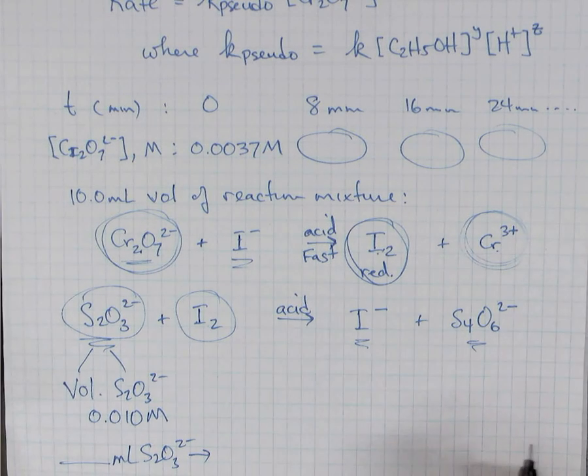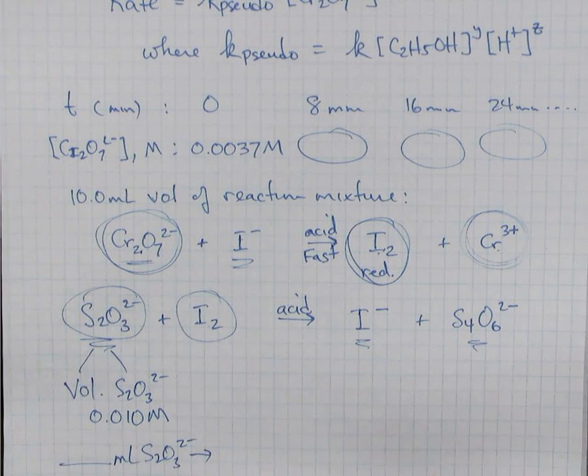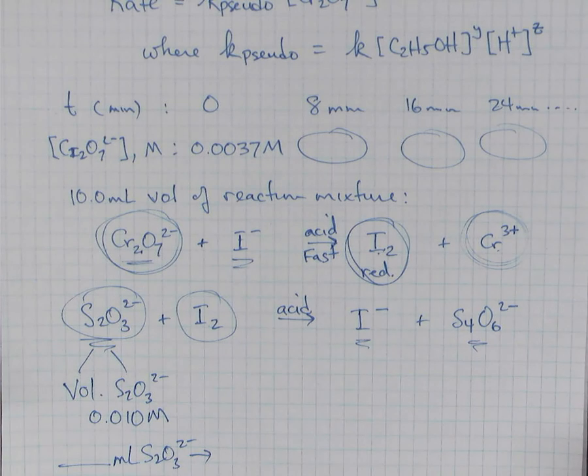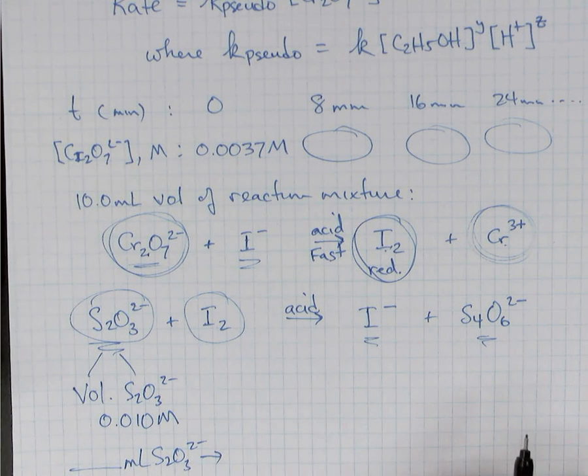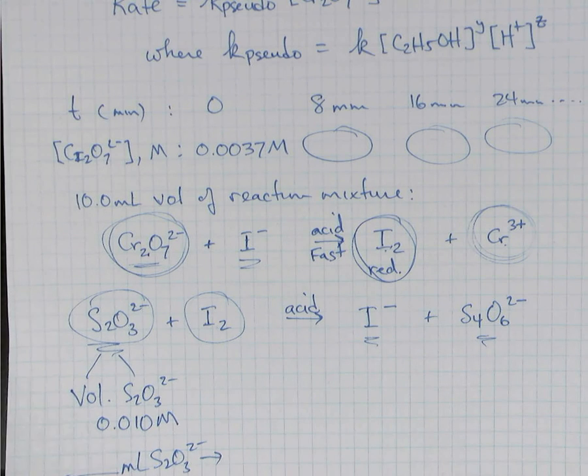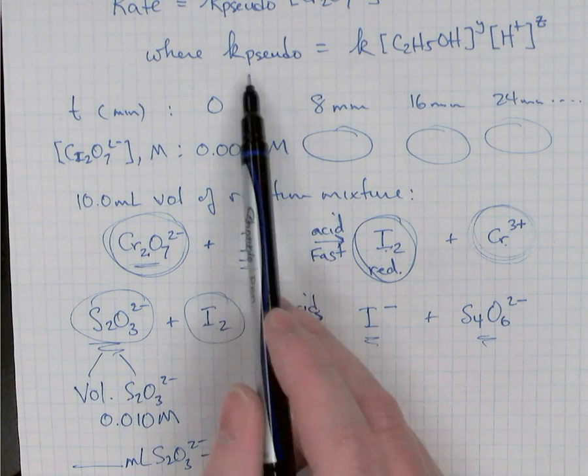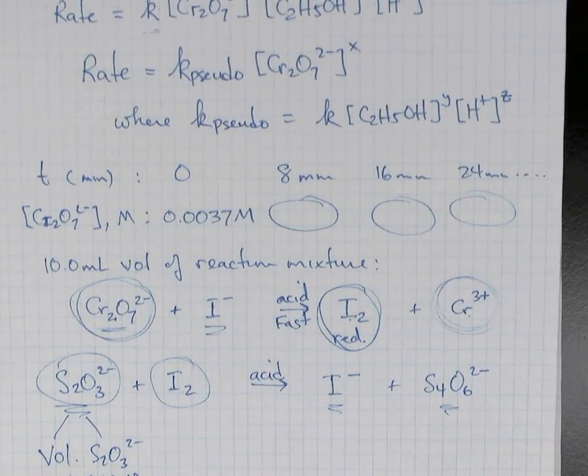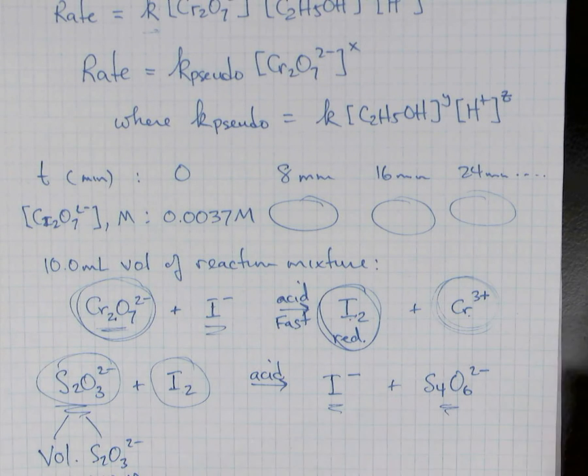Once you have those concentrations calculated, you can then do your graphing, the kinetics graphing. You'll make three graphs, and I'll want these printed from your computer from Microsoft Excel. So you'll make a graph of concentration of dichromate versus time, natural log of concentration versus time, and the reciprocal of concentration versus time. You'll do linear regression on each of the three graphs, and we'll choose the graph which is most linear. We'll want to know the slope of that linear line to calculate the pseudo rate constant. So I hope that helps with your calculations. Talk with your lab partner. Each person should do the calculations for themselves.